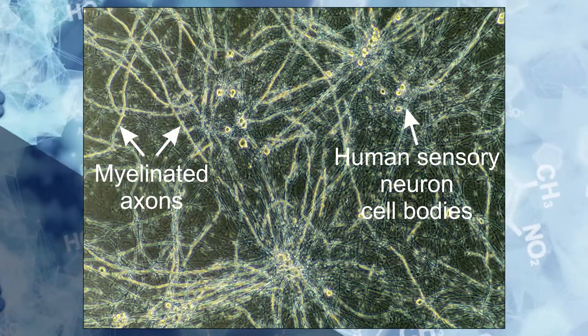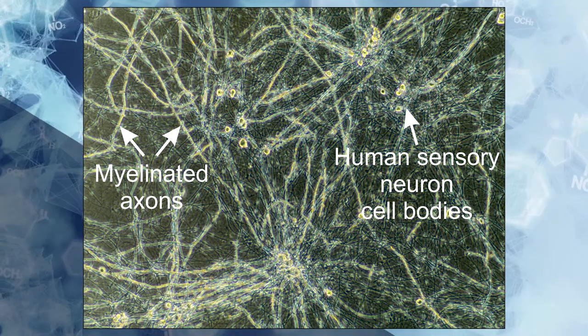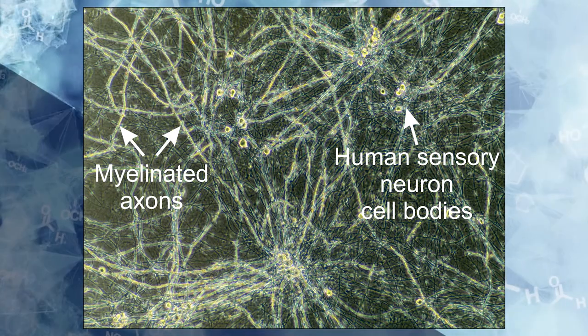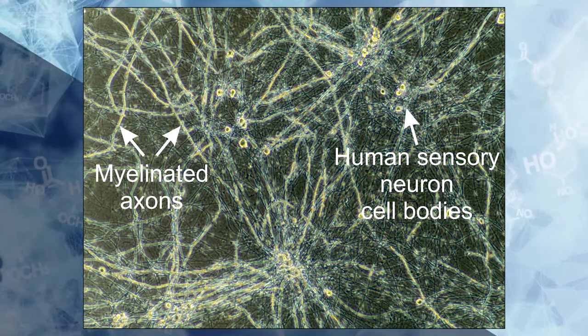So here you're seeing a live myelinating co-culture. You can see the individual human cell bodies and the phase-bright elongated structures are the myelinated axons.